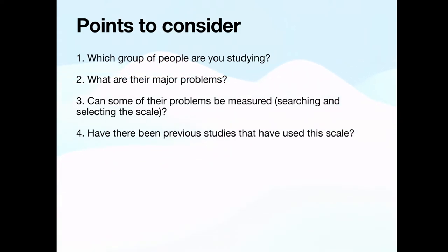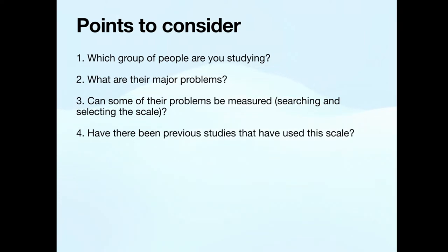I would usually recommend first-time researchers to use standardised scales rather than trying to develop your own. Read previous studies by going to Google Scholar and typing in keywords you are interested in — for example, 'racism among migrant labourers,' or the name of the tool itself — and you will find previous studies on it. Read those studies and find out the validity and reliability of the tool if they have mentioned it.